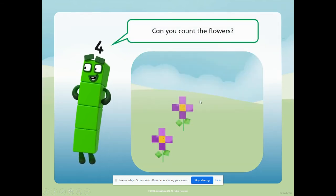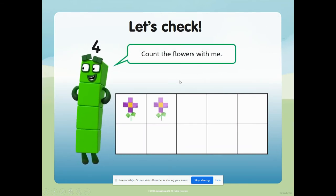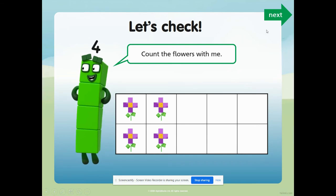Can you count the flowers? One, two, three, four. Number four says, I think there are four flowers. Am I right? Is he right? Yes. How do you know? Because we counted four flowers. Do you remember? We could see there's four. Let's check - count the flowers with me. One, two, three, four. This is a tens frame where we learn to count numbers - we learn to see things just like that. So there are four flowers.